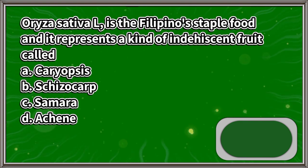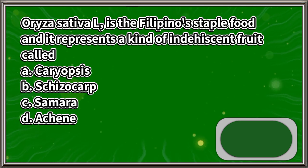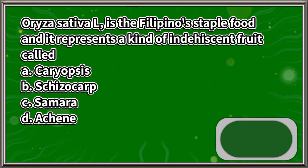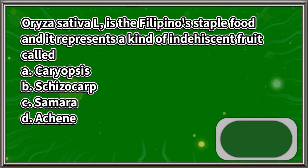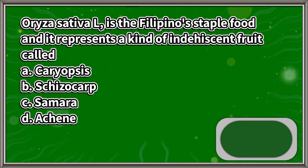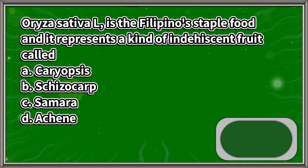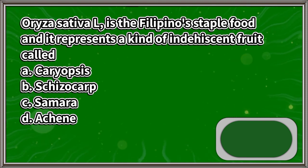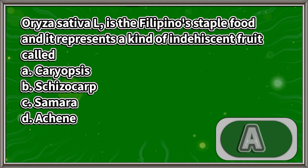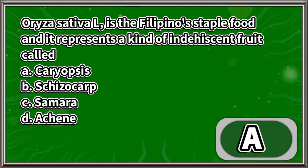Oryza sativa L. is the Filipino staple food, and it represents a kind of indehiscent fruit called: A. Caryopsis, B. Schizocarp, C. Samara, D. Achene. The answer is letter A.